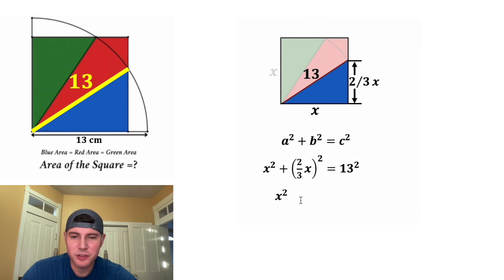We can bring down the x squared, and then this squared is going to distribute to both the two-thirds and the x squared. And then this squared is going to distribute to both the two and the three, and that'll give us four ninths. And let's smush everything together and set that equal to 13 squared, which is 169.